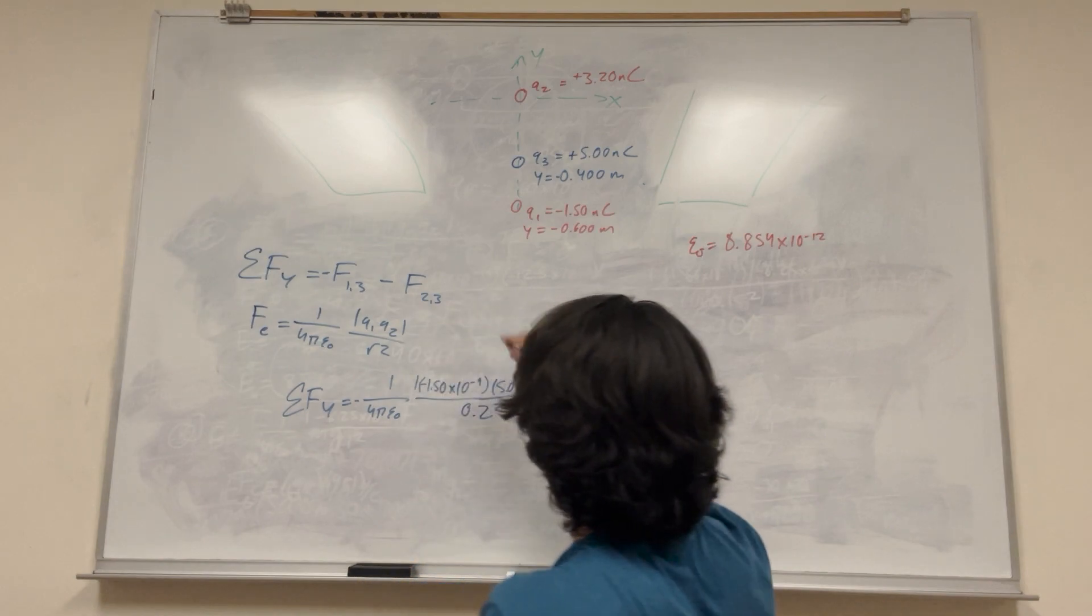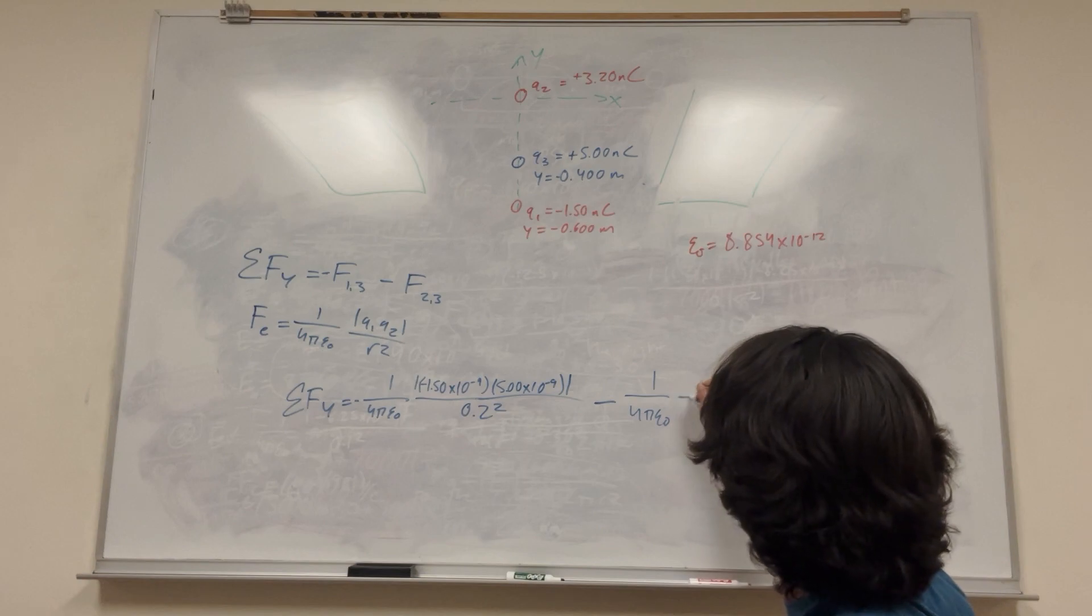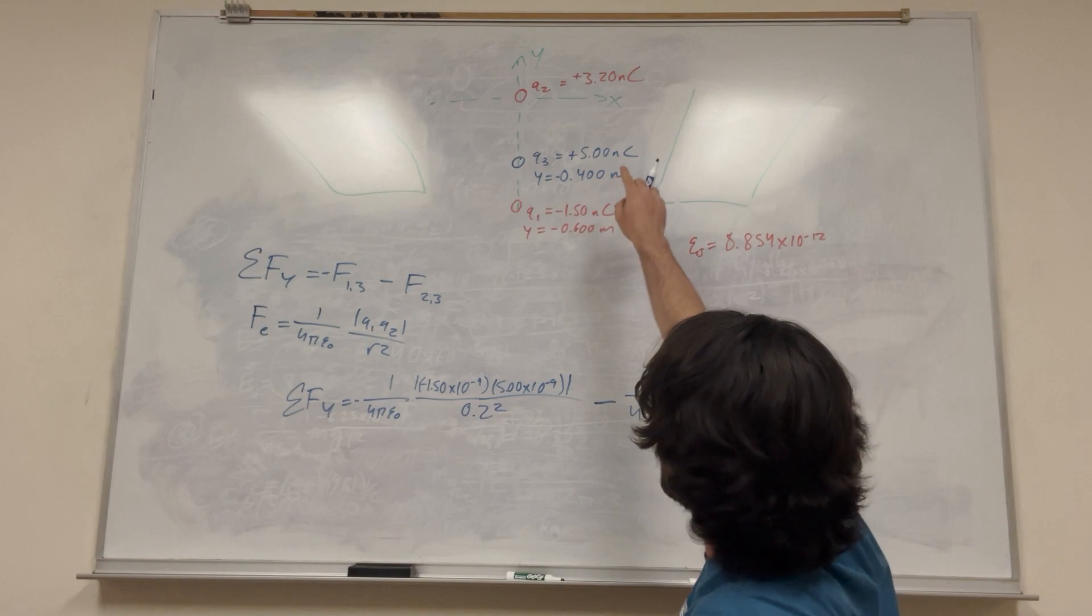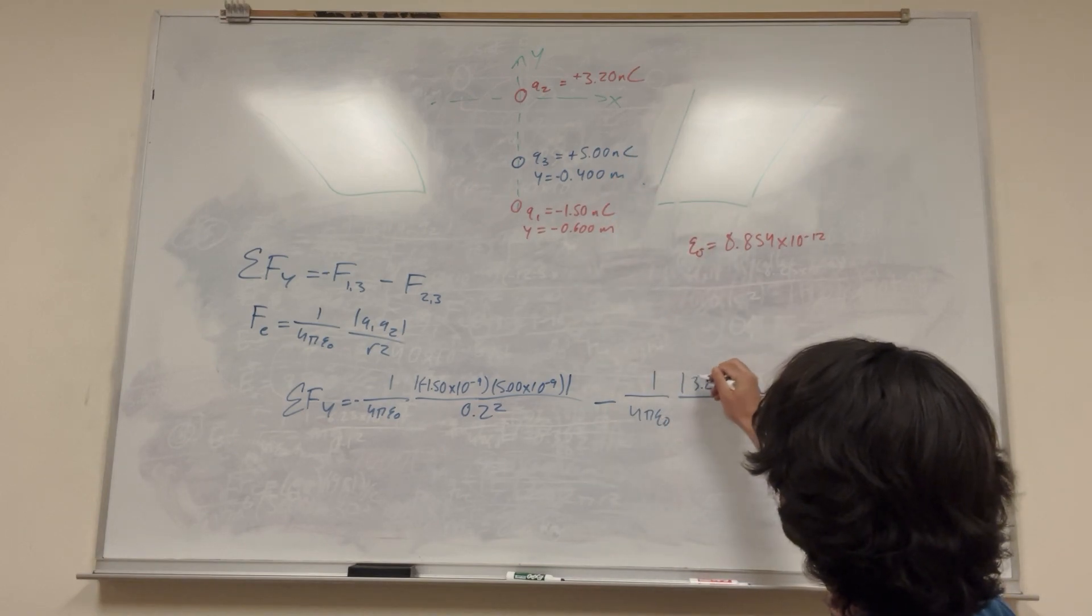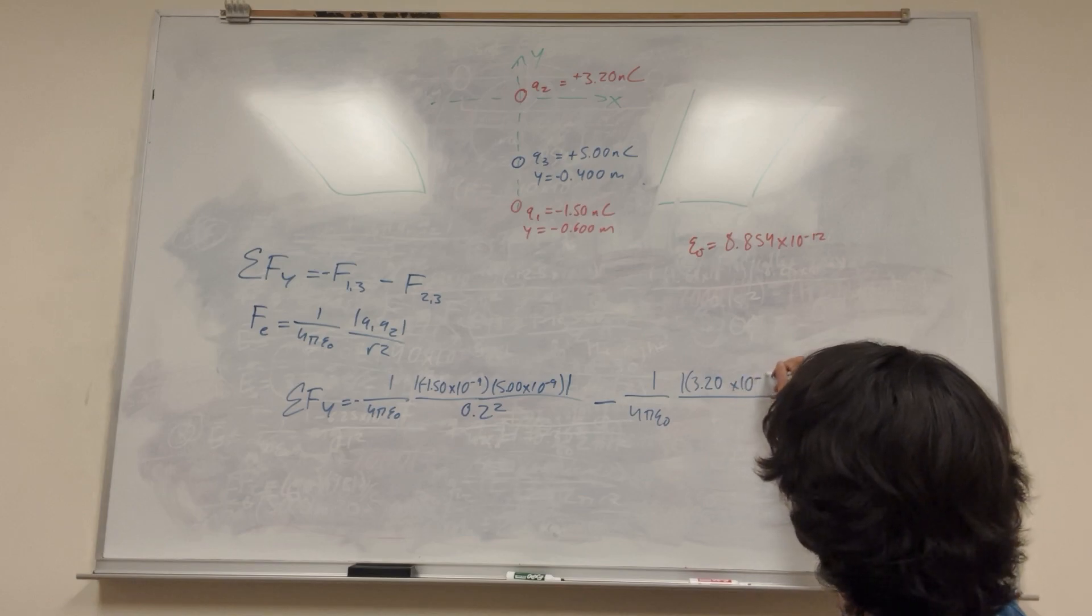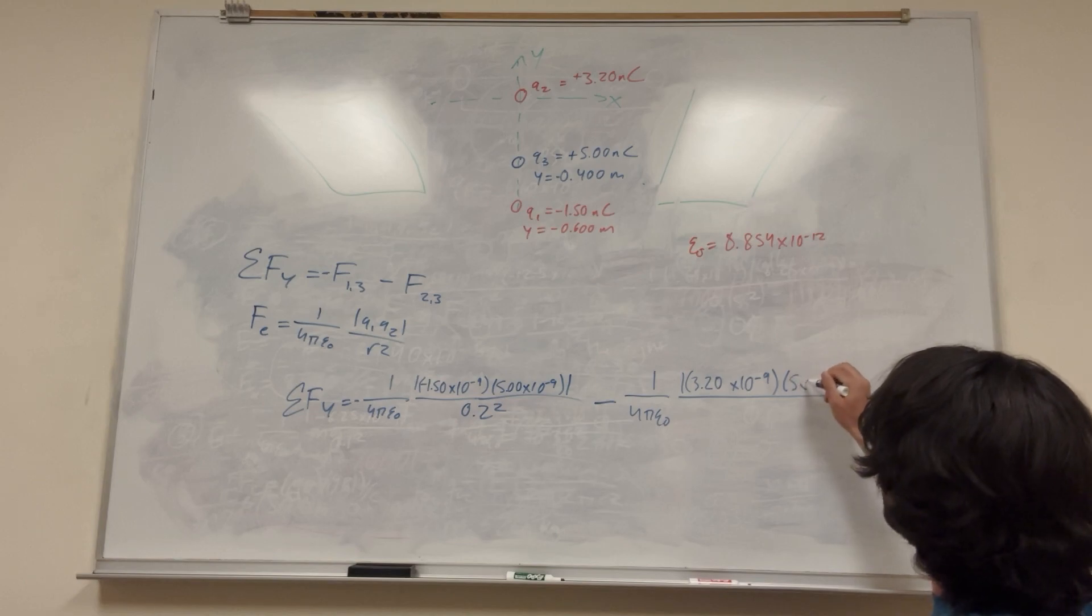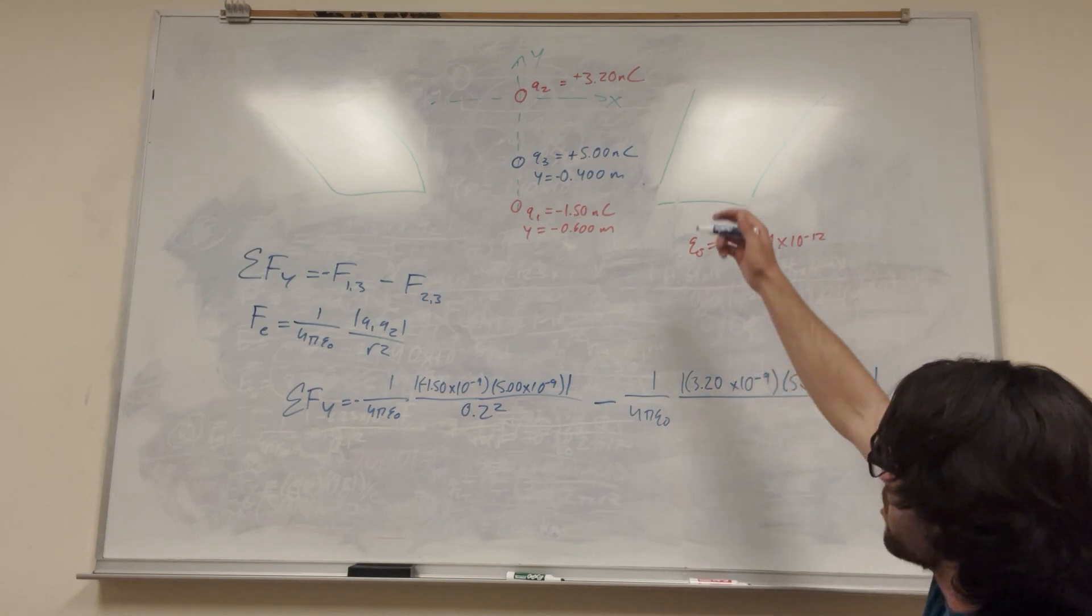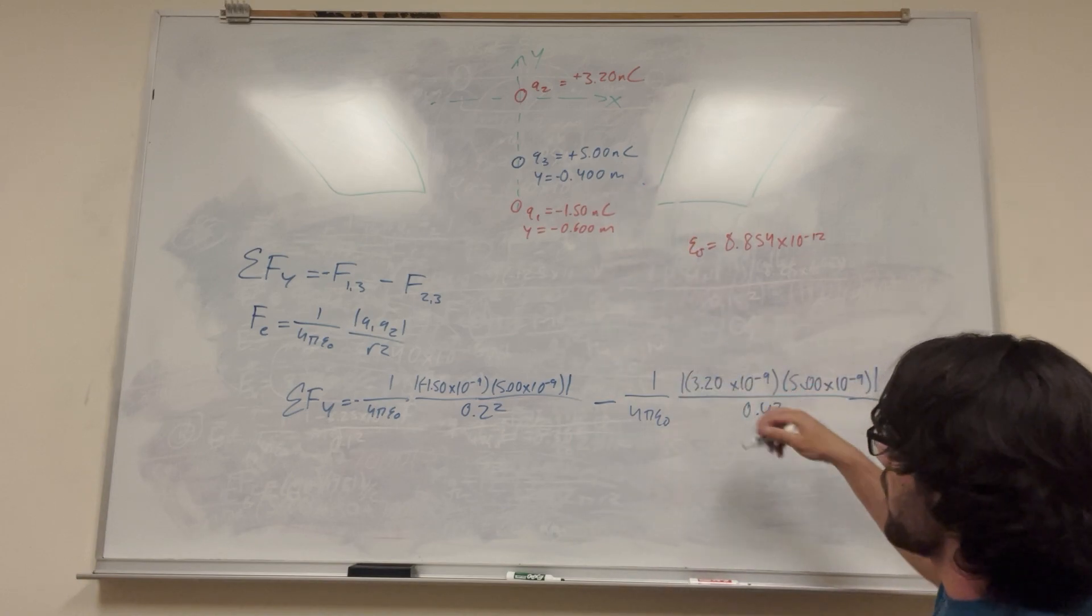So then we're going to subtract another force, like we said here. So this is also 1 over 4π epsilon naught magnitude of charge 2, which is 3.20 times 10 to the negative 9, and then the charge of our one in the center, which is again 5.00 times 10 to the negative 9, all that in absolute value, divided by its radius between those two squared, so 0.4 squared between those two.